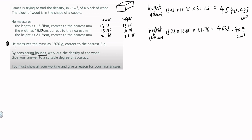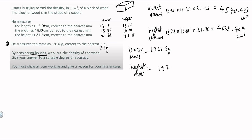He measures the mass as 1,170 grams, correct to the nearest 5 grams. Half of 5 grams is 2.5 grams, so I need to add and subtract that. First, taking away 2.5 to find the lowest possible mass: 1,170 minus 2.5. Then the highest possible mass: 1,170 plus 2.5. Those are the worst case scenarios for the mass.